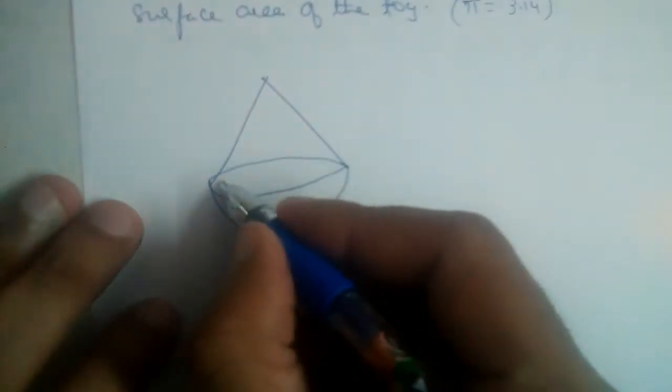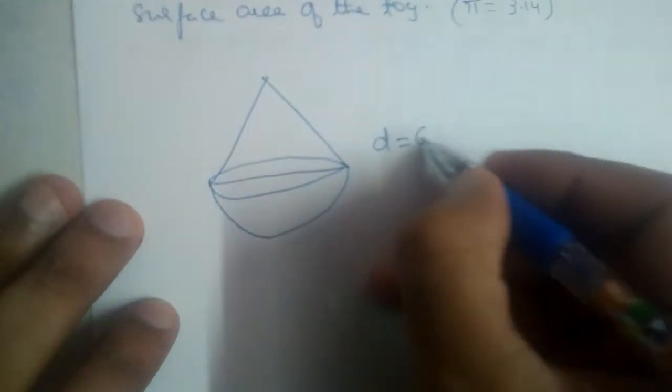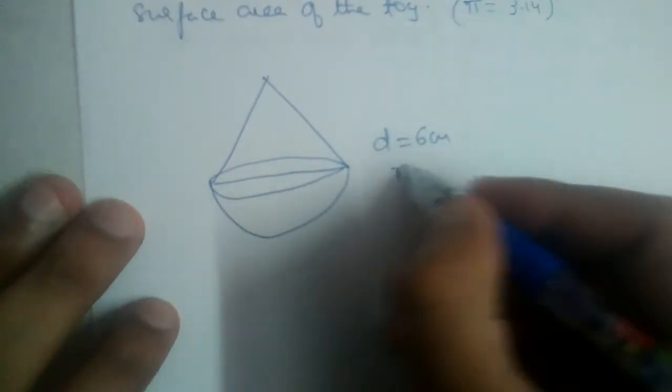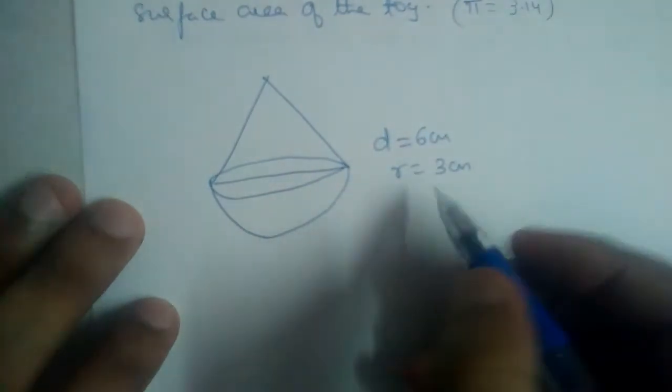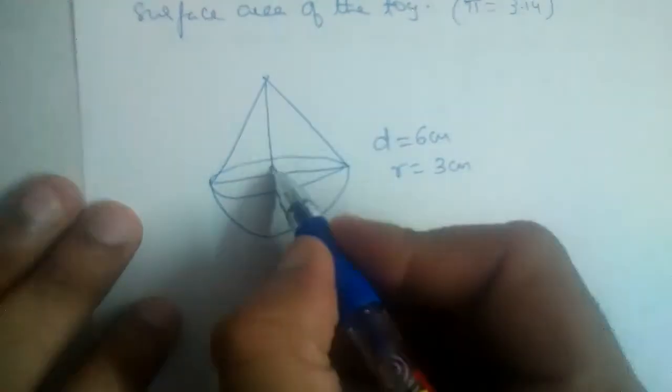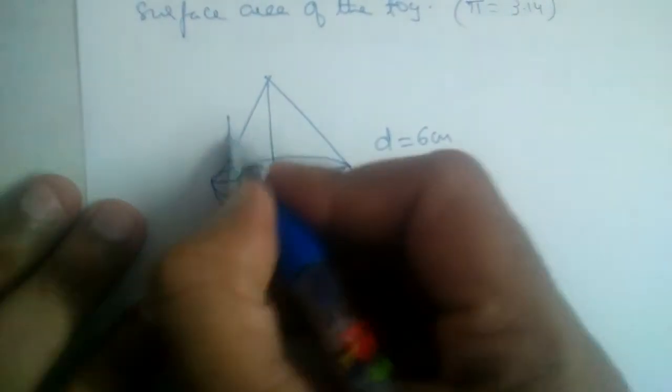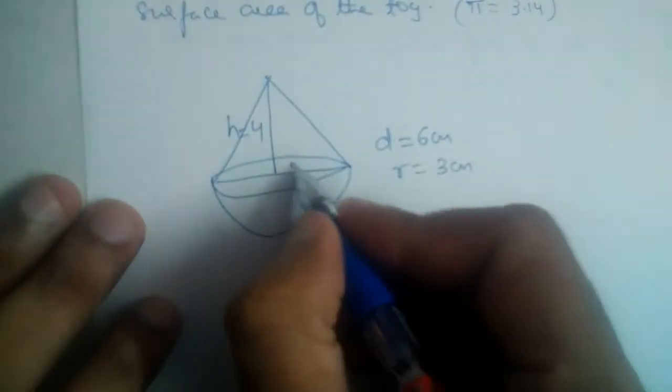The diameter of the base d is equal to six centimeters, so radius will be equal to three centimeters. And height of the cone is equal to four. Given this is four, so this is equal to three.